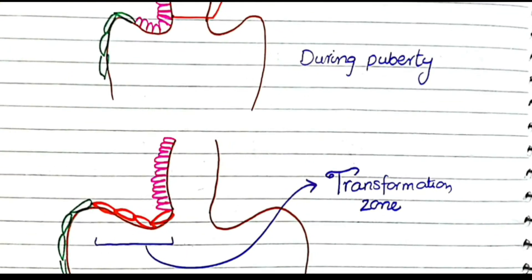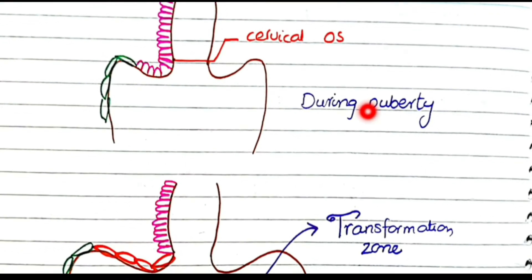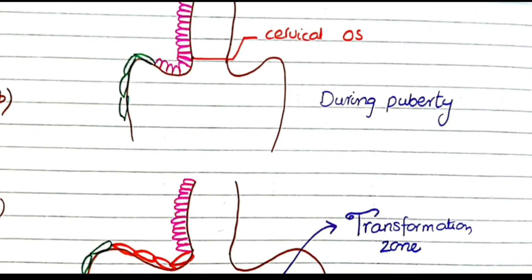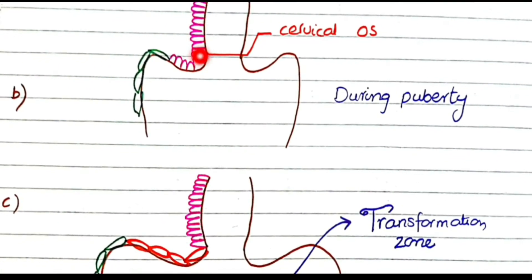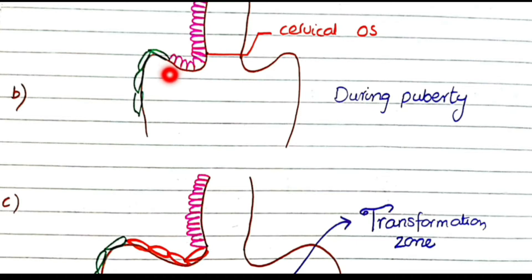During puberty there is a great upsurge of reproductive hormones like estrogen, and this estrogen causes proliferation of the columnar epithelial cells. So the squamous-columnar junction, which was initially at the level of the cervical os, advances further along the ectocervix, and this new squamous-columnar junction is now positioned halfway along the ectocervix.